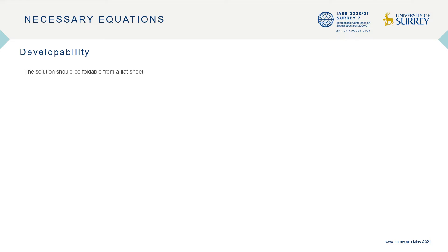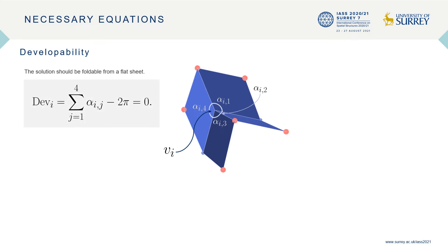The first one is called developability. We want the structure to be foldable from a flat sheet. Each vertex is surrounded by four panels and therefore four panel angles denoted by α1, α2, α3 and α4. So developability corresponds to the constraint on the sum of all the panel angles around the vertex to be 2π.